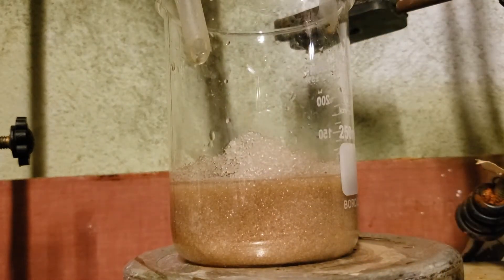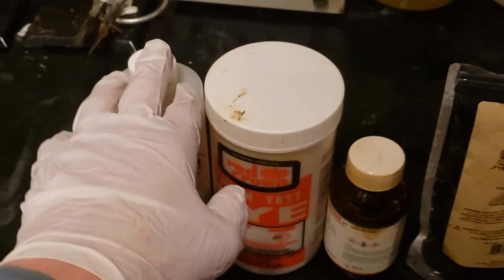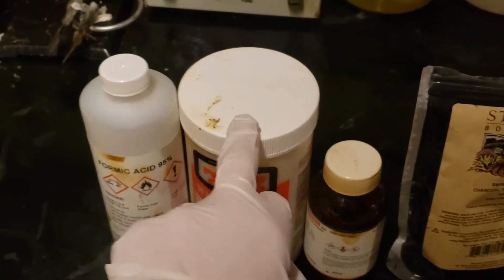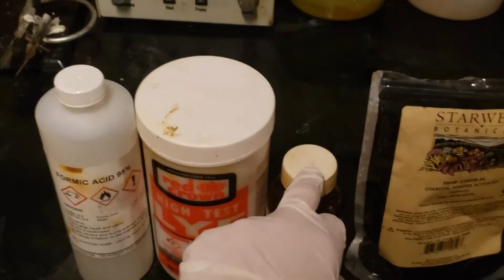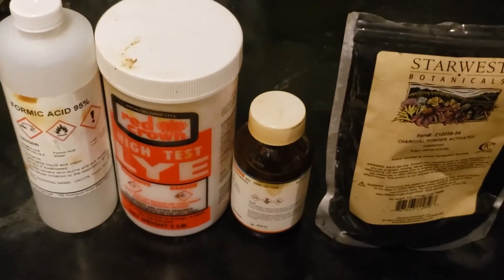Without further ado, let's see the chemistry. In terms of chemicals, you will need 85% formic acid, sodium hydroxide, O-phenylenediamine, and activated charcoal. I find that it helps my yield if all your reagents are scuffed like mine are.